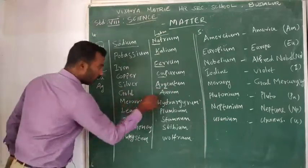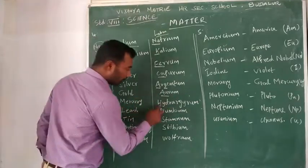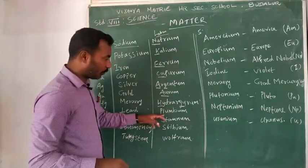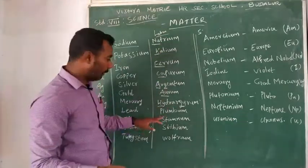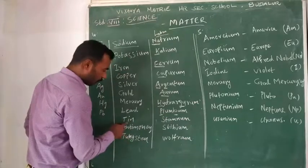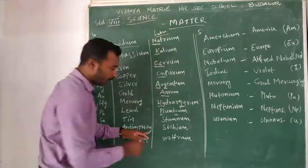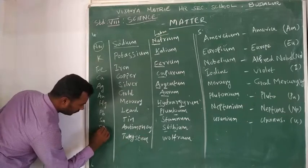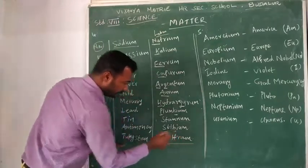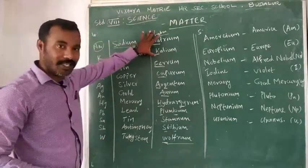Gold — symbol Au, Latin name Aurum. Mercury — symbol Hg, Latin name Hydrargyrum. Lead — symbol Pb, Latin name Plumbum. Tin — symbol Sn, Latin name Stannum. Antimony — symbol Sb. Tungsten — Latin name Wolfram, symbol W. First letter capital, second letter small.